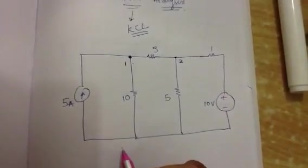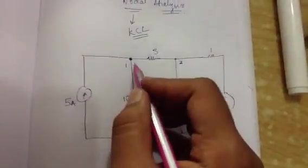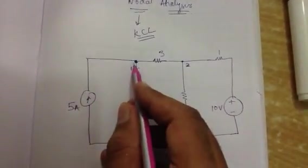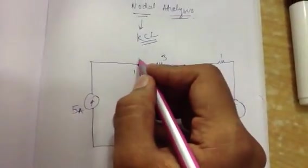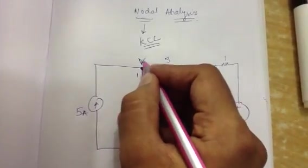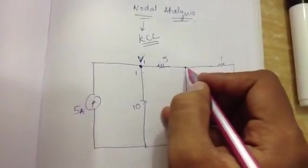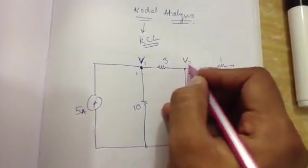Now, according to Kirchhoff's current law, we have the current entering this node is equal to the current going out. Which means, say, let us say there is a voltage V1 at this node and a voltage V2 at this node.